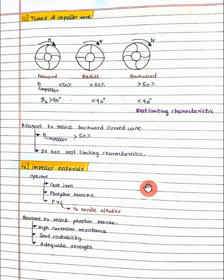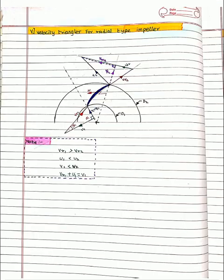And these are the different materials in which you can make your impeller: cast iron, phosphor bronze, PVC. And this is how you get your velocity triangles.